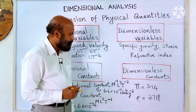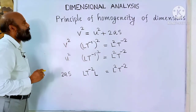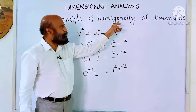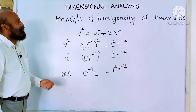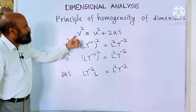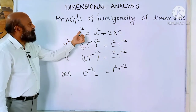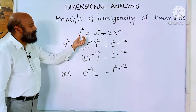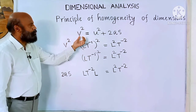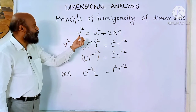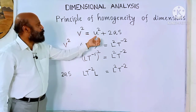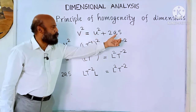Then there are dimensionless constants — they have no dimension and are constant. Examples are pi (3.14) and e (approximately 2.718). Now let's see the principle of homogeneity of dimensions. Consider the equation from laws of motion: v² = u² + 2as.